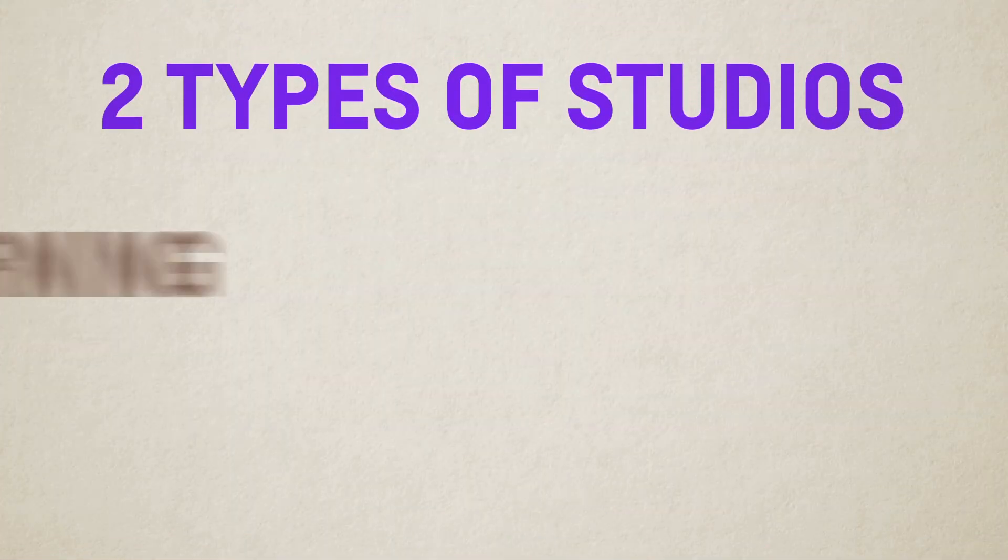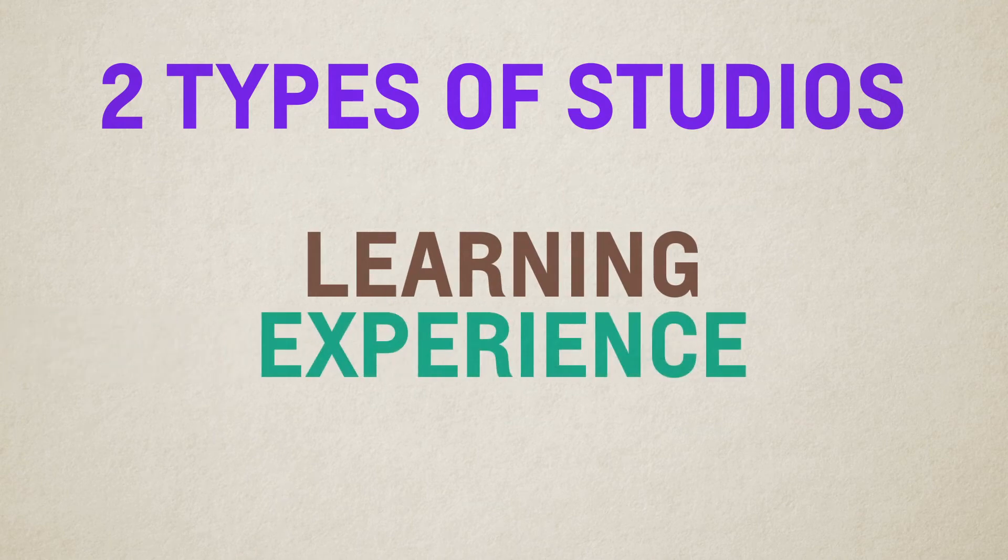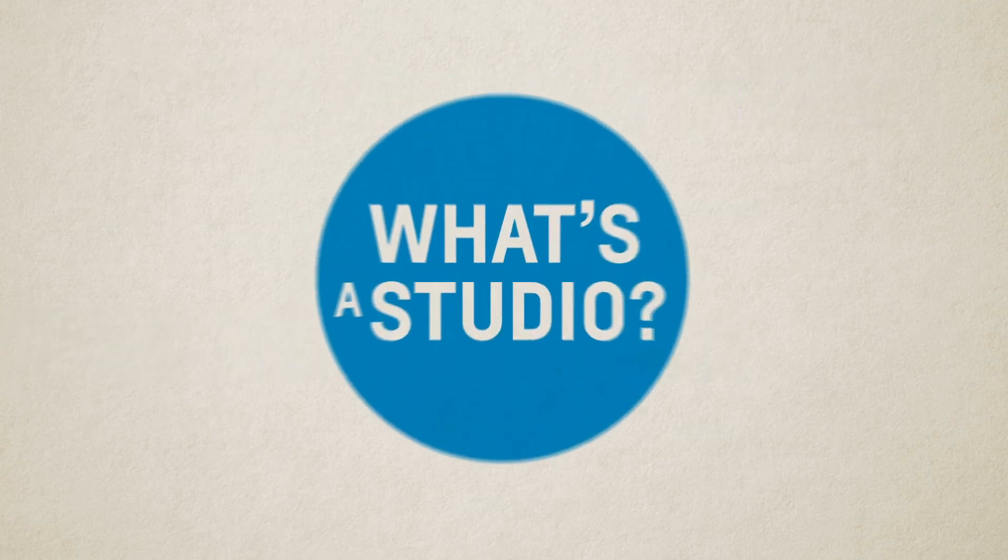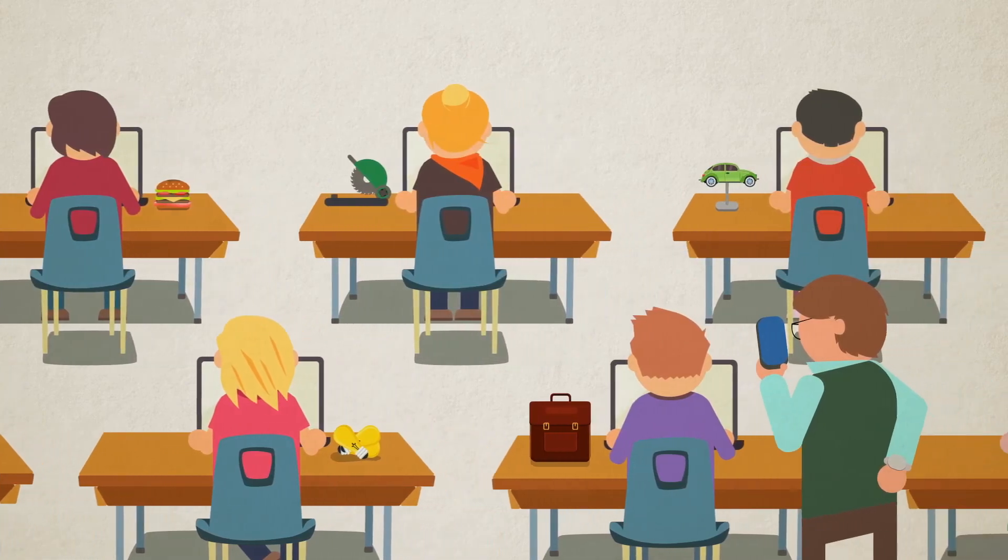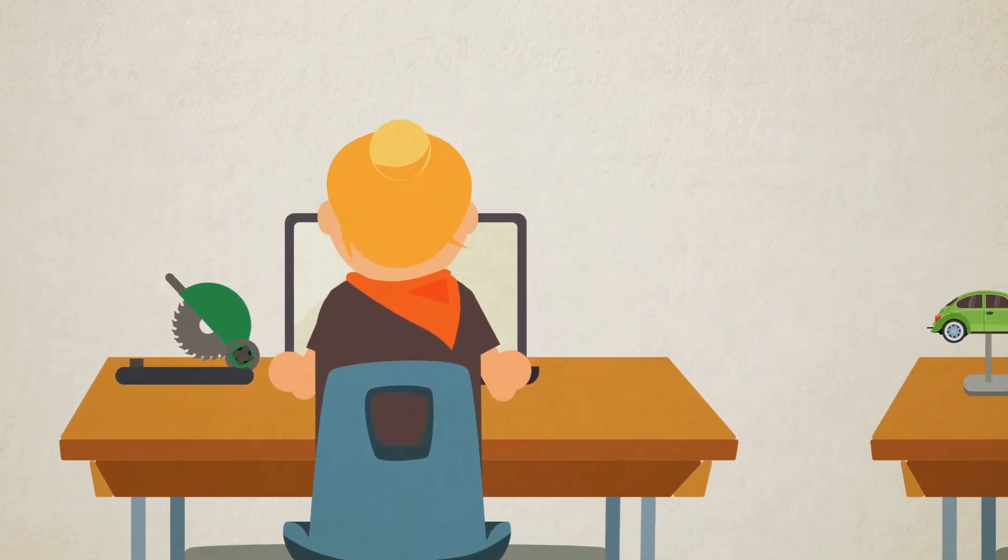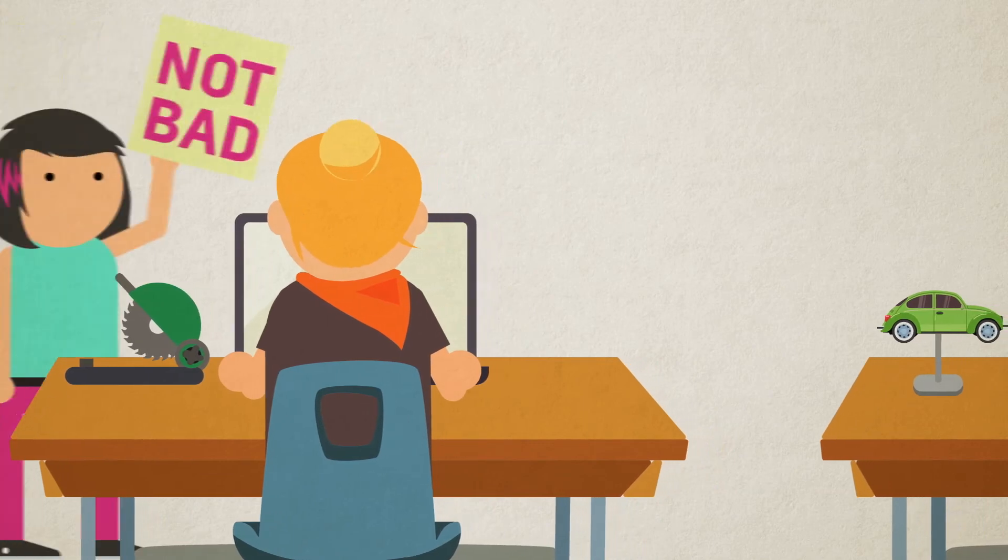The UX major is structured around two types of studio courses, learning studios and experience studios. But first, what's a studio? A studio is not your typical class. It's a class where you work hands-on on projects and get a lot of feedback and mentoring along the way from your peers and your professor.